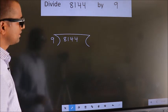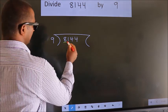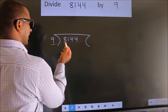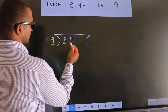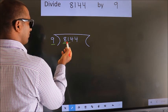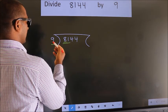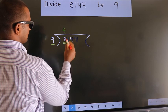Next, here we have 8, here 9. 8 is smaller than 9, so we should take two numbers, 81. When do we get 81 in the 9 table? 9 nines, 81.